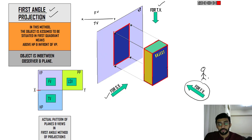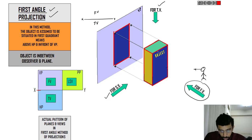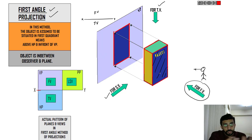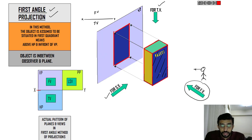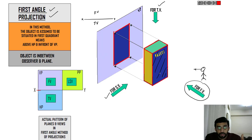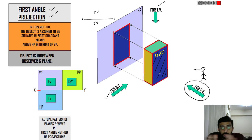So when I look from this side I can see this face. To project it is very simple — from different points, draw lines perpendicular to the plane where you want the projection.